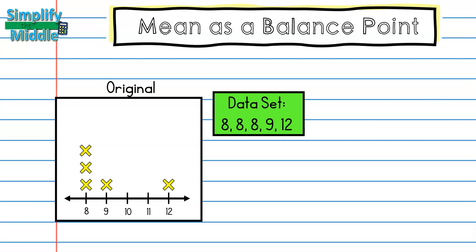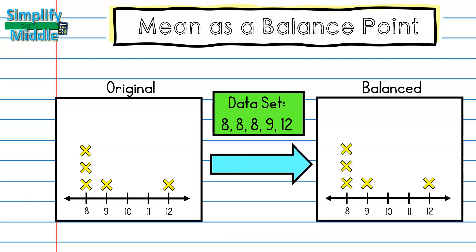We have 8, 8, 8, 9, and 12 listed. This is our original data. Typically you're going to solve mean as a balance point from right here. I want to show you what this looks like before and after, so I'm going to do another line plot that looks exactly the same so that I can show you what the balanced side looks like.